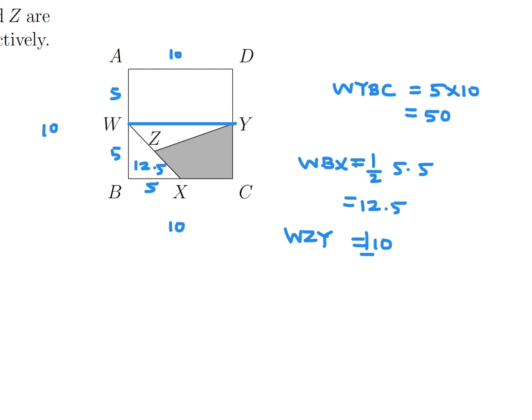So 1 half times 10 times... Now the height is from here to here, and that height is basically half the distance of that 5, so it would be 5 over 2.